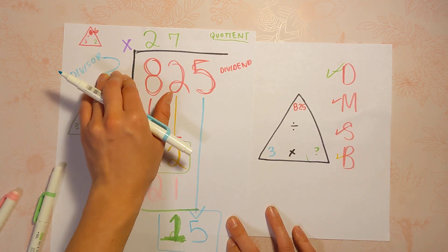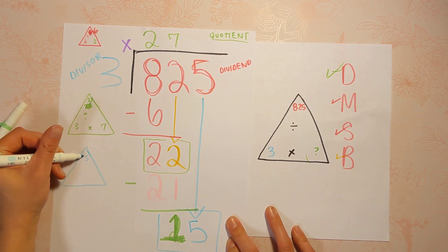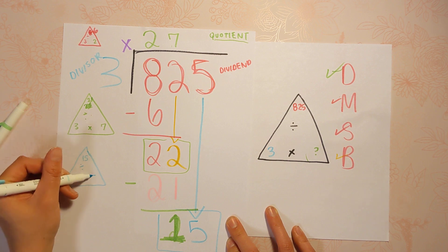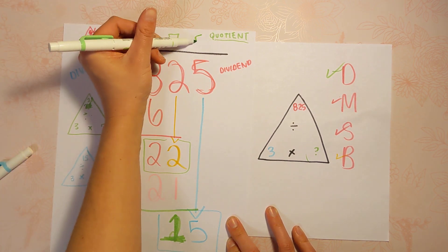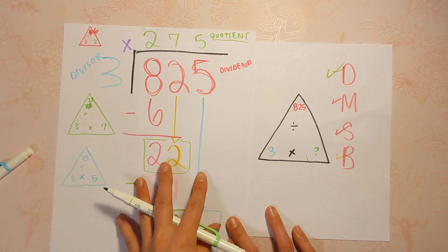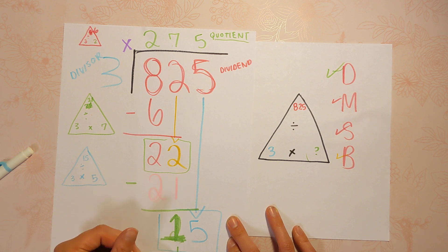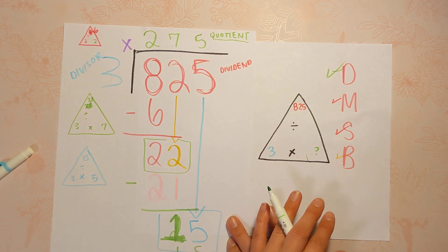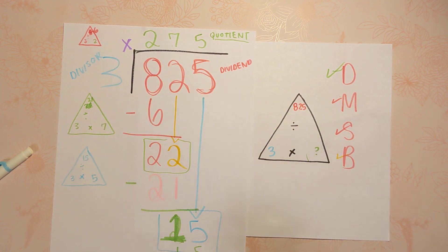15 divided by 3. Ooh, did we finally get one that goes in evenly? Woohoo. Yeah. 15 divided by 3 is 5. So we're going to put that 5 up here. But we still have to do the rest of the steps to check that there's no remainders. So 5 times 3 is 15. We subtract. It's at a 0, which means there's no remainders, which means it goes in evenly. 825 divided by 3 is 275.